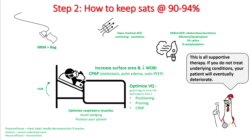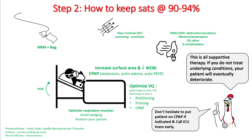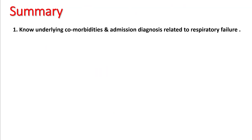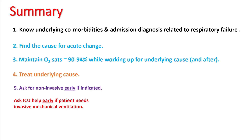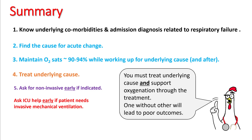Understand that these are all supportive therapies — if you do not treat the underlying condition, your patient will eventually deteriorate. Do not hesitate to put the patient on CPAP if indicated and call the ICU team early. In summary: find the cause for the acute change and maintain O2 sats at 90 to 94% while working up the underlying cause. There are only a few physiological things you can do to improve oxygen sats, and if they don't work, you will need more advanced airway support such as invasive mechanical ventilation. Treat the underlying cause, ask for non-invasive ventilation early if indicated, and involve the ICU if invasive ventilation is needed. You must both treat the underlying cause and support oxygenation — one without the other leads to poor outcomes. Thank you.